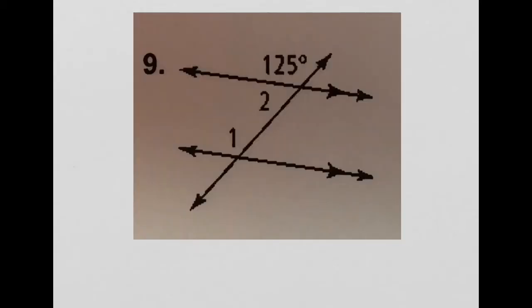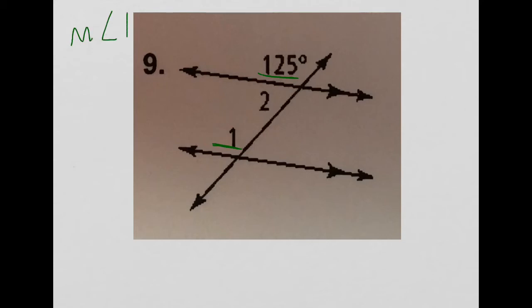Next is problem 9, also asking for the measure of angle 1 and angle 2. The angle measuring 125 degrees and angle 1 are corresponding angles — they lie on the same side of the transversal and are in corresponding positions on top of the two parallel lines, as shown by the arrows. Since the lines are parallel, corresponding angles are congruent, so the measure of angle 1 equals 125 degrees.